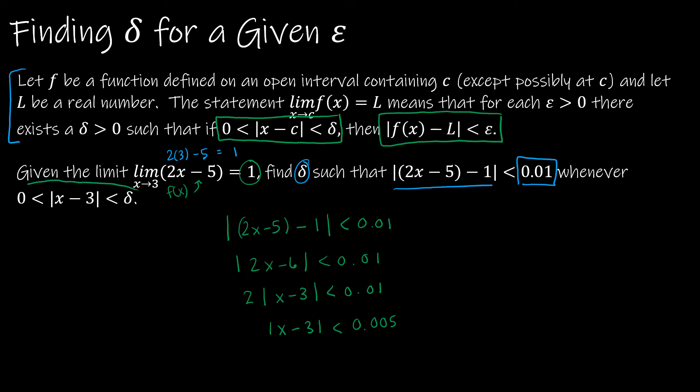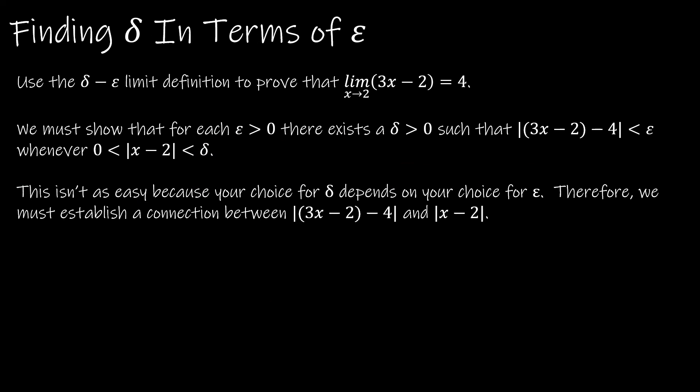So what does that tell me? Well, remember, the limit is whenever 0 is less than |x - 3| is less than 0.005. So what is delta? What delta do I have to find? 0.005. So I've solved, in this case, for delta.